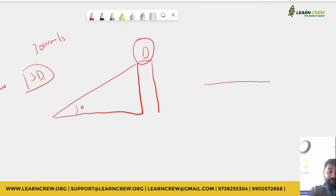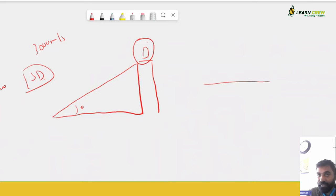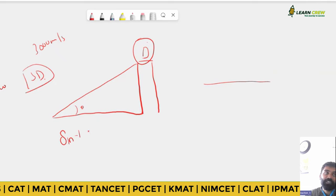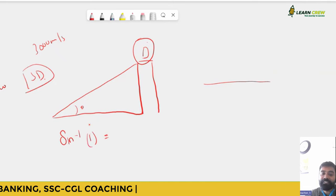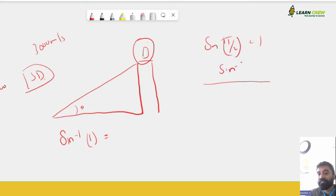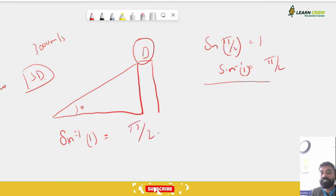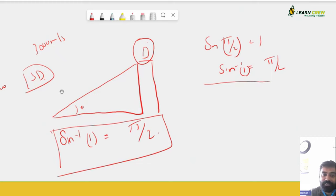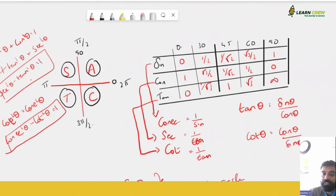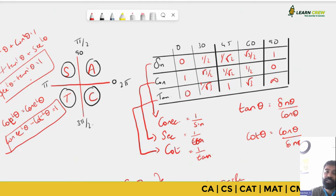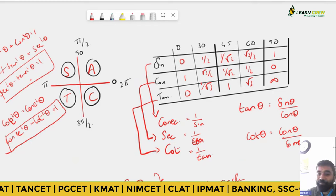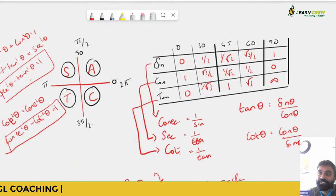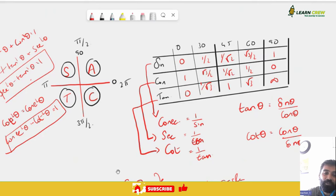Trigonometry is direct — given something, you find angles. Inverse trigonometry works differently. For example, sin inverse of 1: since sin 90° = 1, sin inverse(1) = 90°. It is the reverse process. In exams, they won't just give you values — they'll use expressions like x, y, 1 + x², 1 − x², and square roots. You need to understand what to apply.